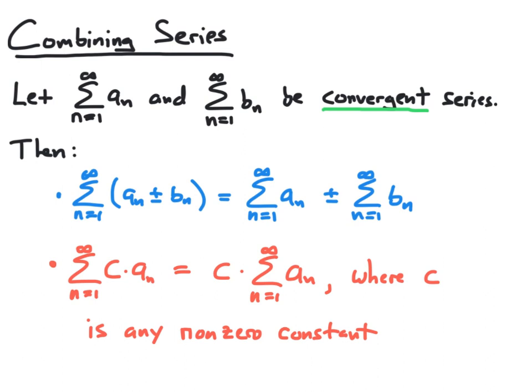Also, if we take our series with the term a sub n and multiply every term in our series by some non-zero constant c, then the series n equal 1 to infinity of c times a sub n will equal c times the original series, n equal 1 to infinity of a sub n.